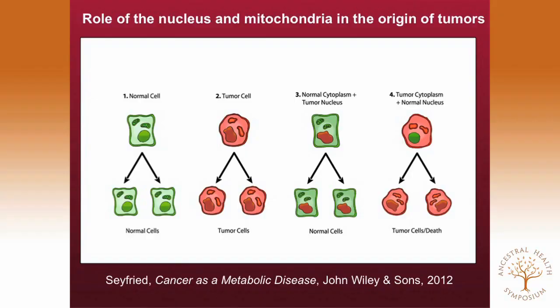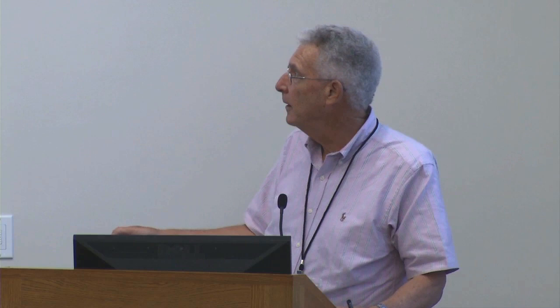There have been a number of studies where nuclei have been transferred — in animal and human tumors — from one cell to another. When the nucleus of a cancer cell is transferred to the cytoplasm of an oocyte or early stem cell, you get normal cells, sometimes normal tissues, and sometimes complete organisms. The mutations associated with cancer don't cause cancer — they abort development. If you take the nucleus from a normal cell and put it into the cytoplasm of a cancer cell, you either get dead cells or tumor cells. This indicates that mitochondria can suppress tumorigenesis and that mutations are not the drivers of this disease.